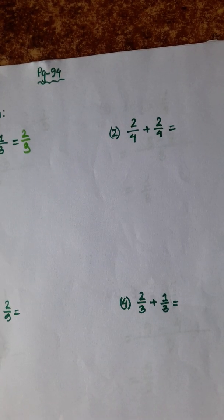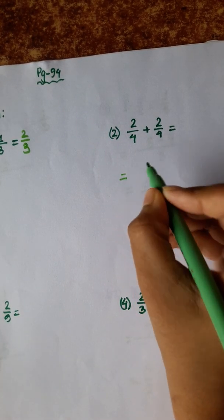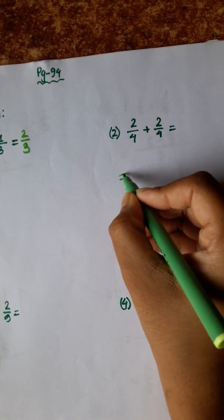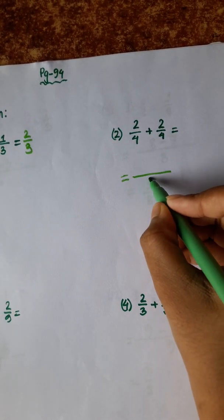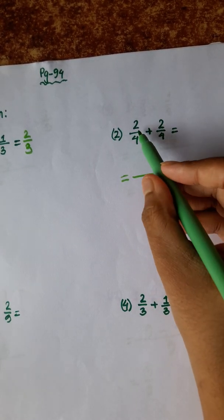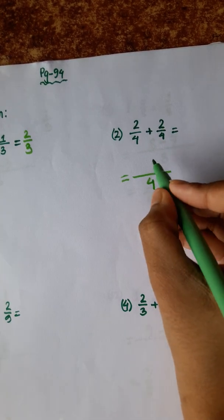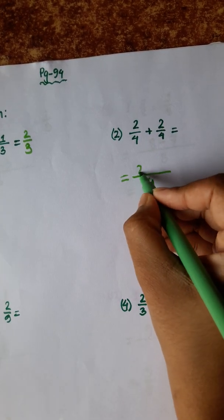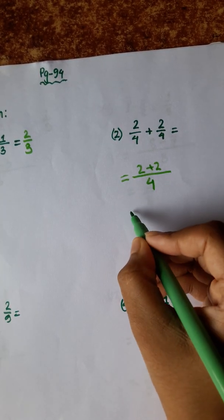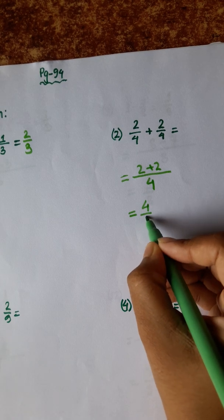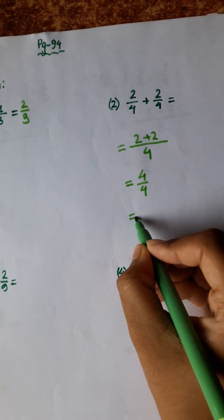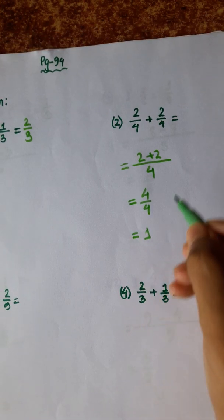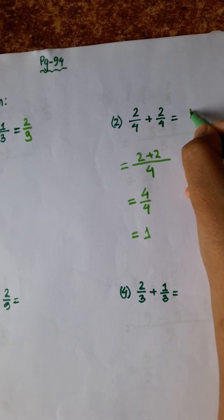Next, number 2: 2 by 4 plus 2 by 4. The denominator is the same, so we add the numerators: 2 plus 2 is 4 by 4. And 4 by 4 simplifies — cancelling gives us 1. So the answer is 1.